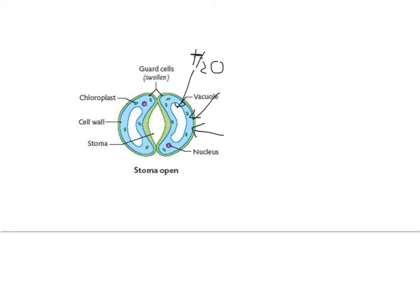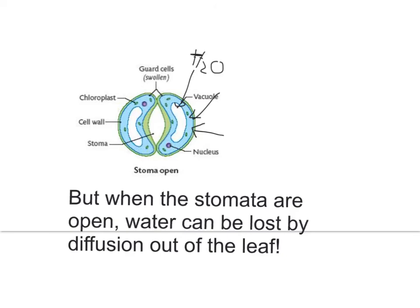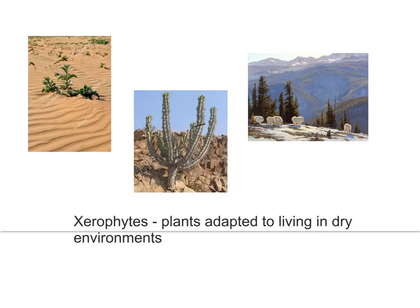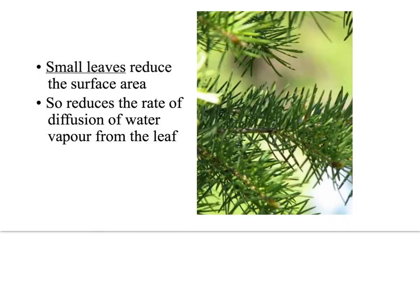With the stomata open, carbon dioxide can diffuse into the leaf and be available for photosynthesis in the palisade mesophyll. One problem is that when the stomata are open, water can be lost by diffusion out of the leaf. This causes difficulties for plants living in areas where there is not enough water. Plants that live in dry environments are called xerophytes, and they often have adaptations for conserving water. Dry environments include not just deserts, but also salt estuary areas, sand dunes, and very cold areas where water is trapped in ice and unavailable to plants.